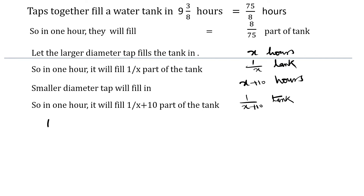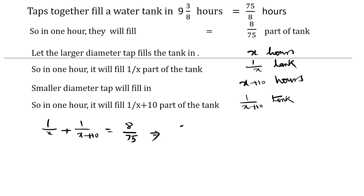So in 1 hour, the larger diameter tap fills 1 upon x part of the tank, plus the smaller diameter tap fills 1 upon (x plus 10) part of the tank. As per the question, in 1 hour they together fill 8 over 75, so we equate this to 8 over 75.